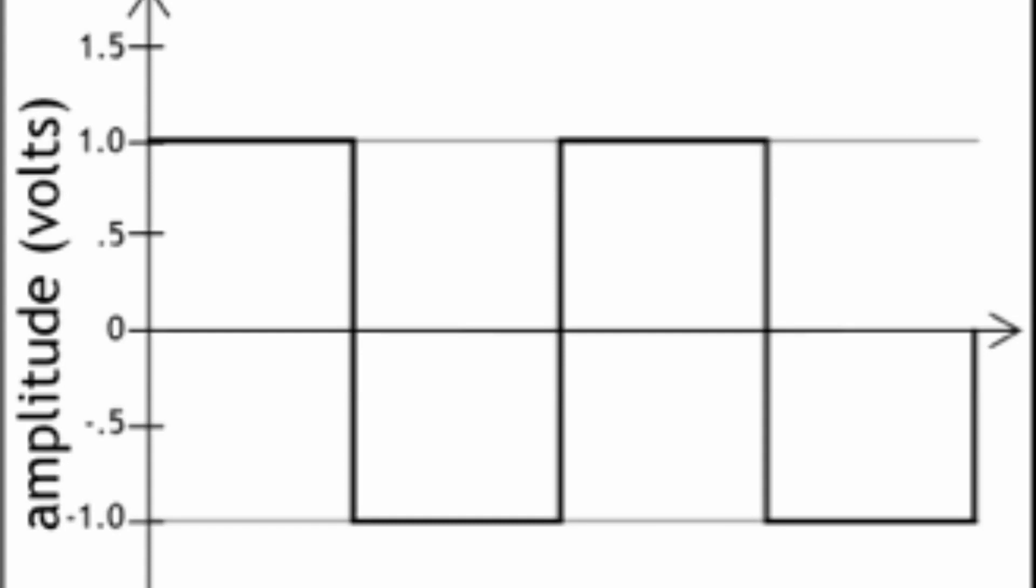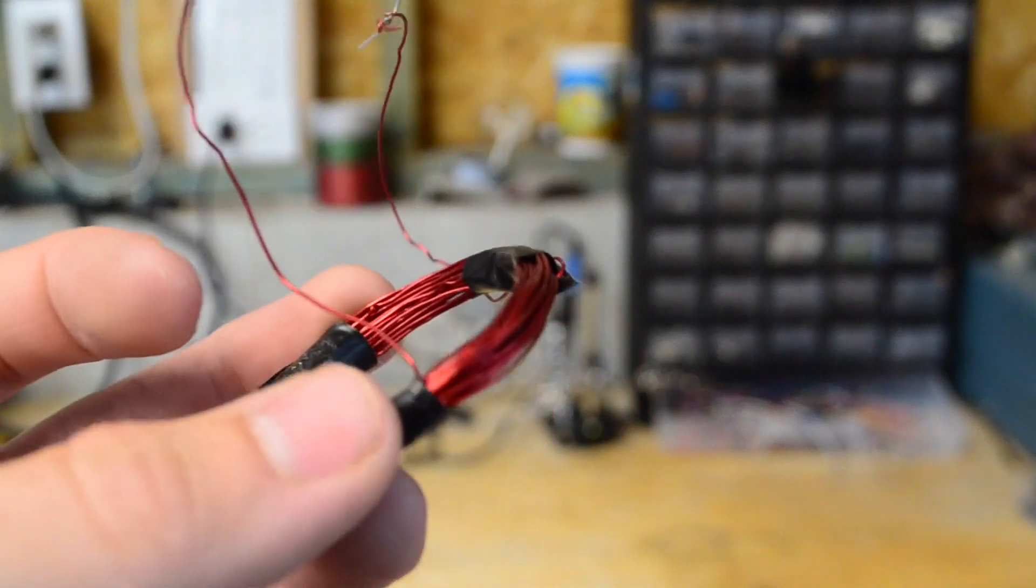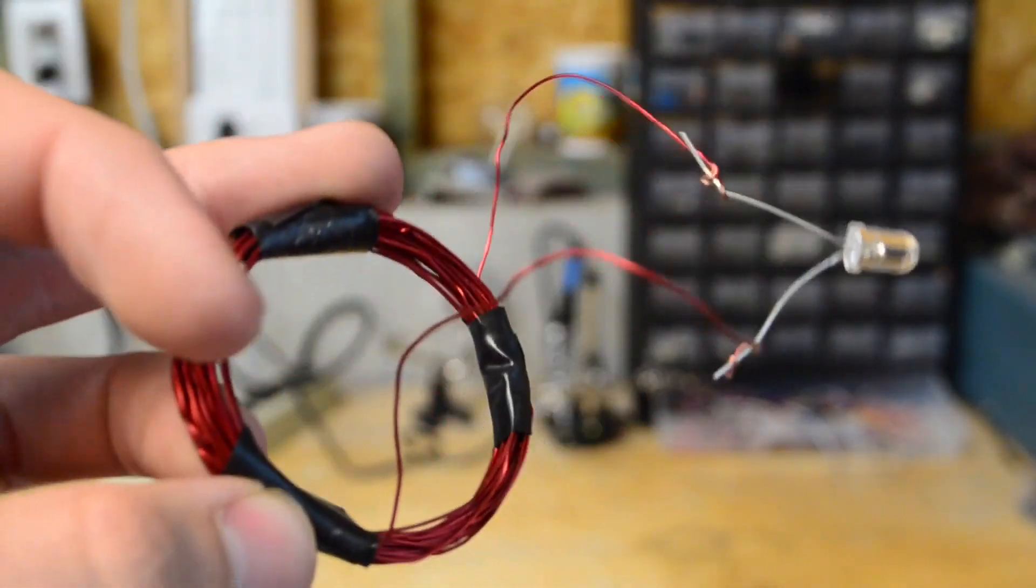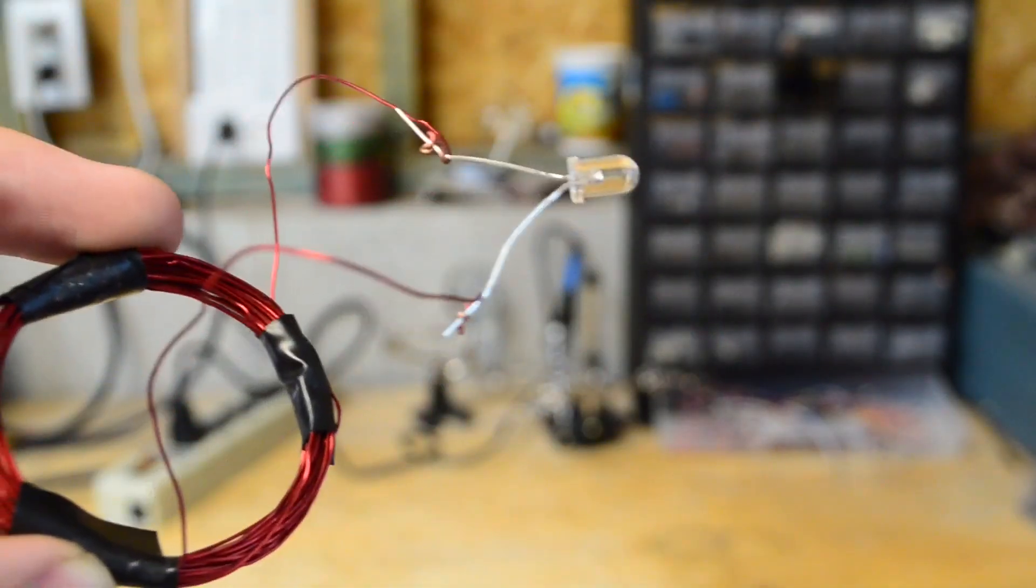I loosely wrapped 40 turns of magnet wire I salvaged out of a TV to form this. This will act as a wireless energy field detector, as wireless energy will induce a current into this coil and therefore make the LED light up.